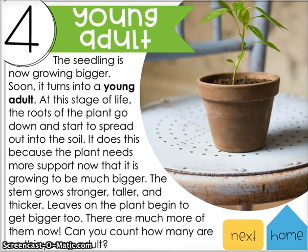Stage four is called a young adult. The seedling is now growing bigger and soon turns into a young adult. At this stage, the roots go down and start to spread out in the soil because the plant needs more support as it grows bigger. The stem grows stronger, taller, and thicker, and the leaves begin to get bigger too — there are much more of them now. Can you count how many are on this young adult?